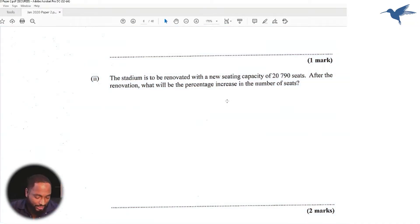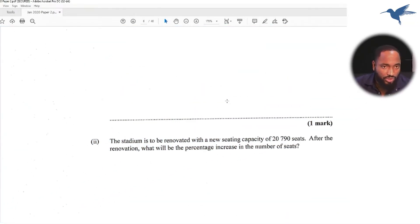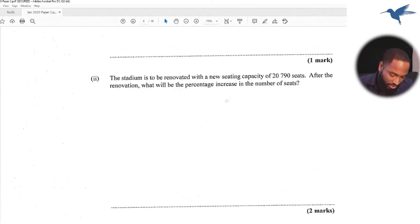So there's an increase in the number of seats. After the renovation, what will be the percentage increase? So we did an increase. Was the original number 15,400? So originally we had 15,400 persons or people in the stadium. Now we have 20,790.